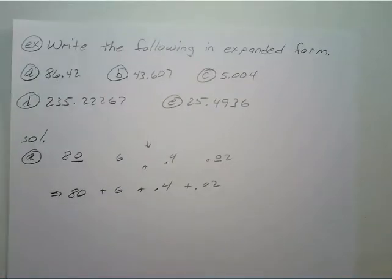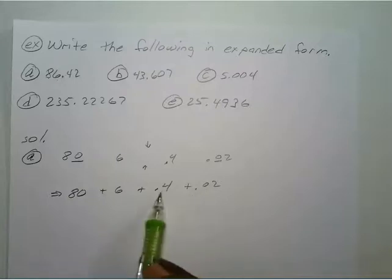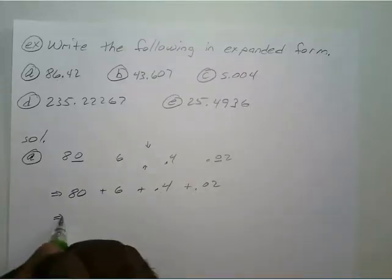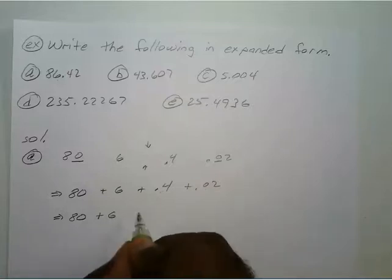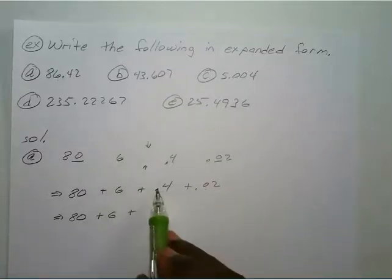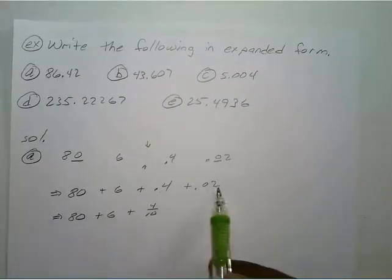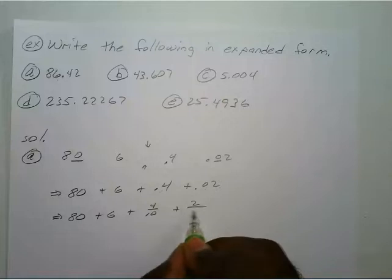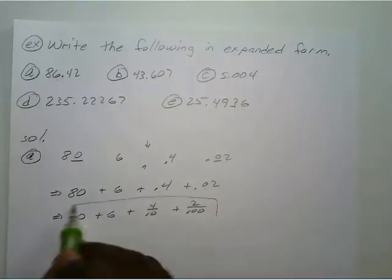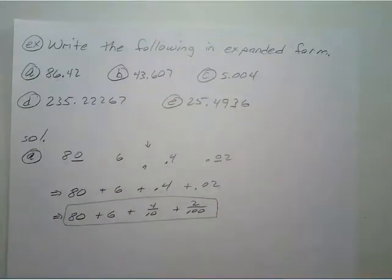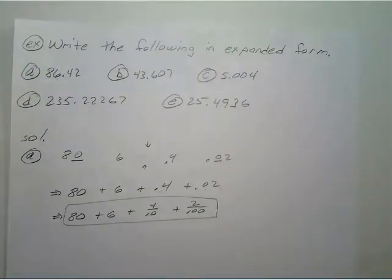Now we convert those into fractional form. You have 80 plus 6, plus 4 tenths — it's just one decimal place to the right, so four tenths — plus two hundredths, because the 2 is in the hundredths spot. So that's 86.42 in expanded form.